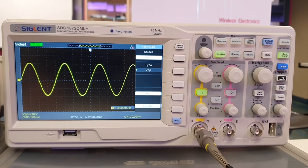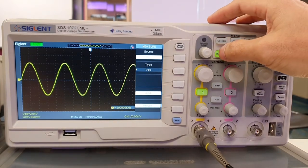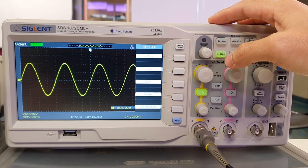To check the frequency of the sine wave, press the Measure button again, then press the button beside time.